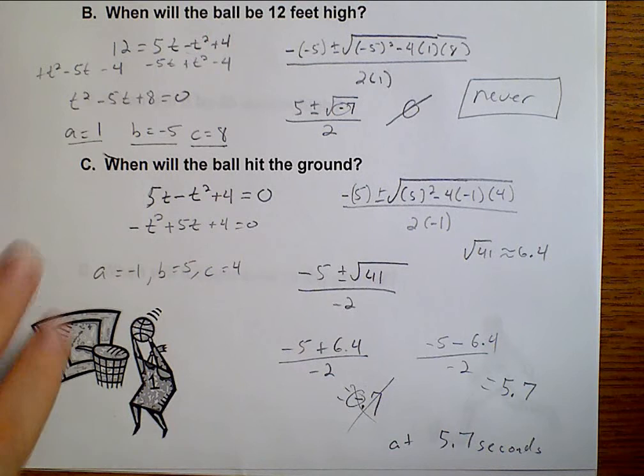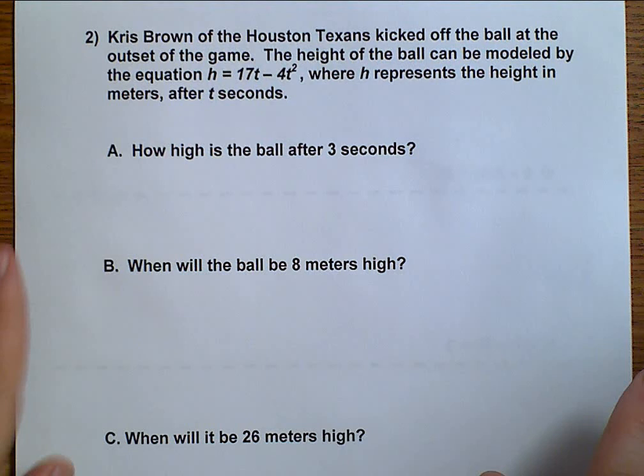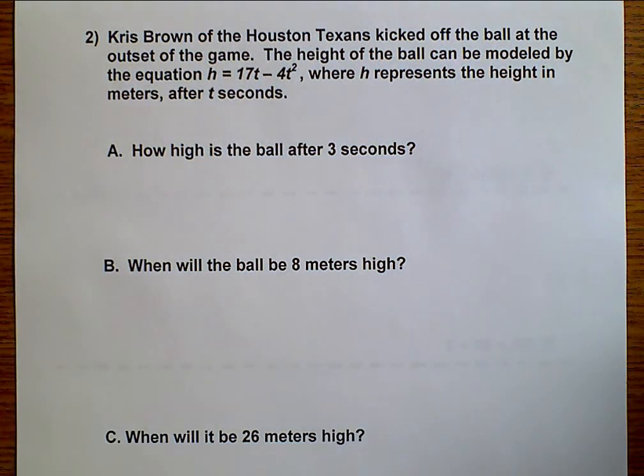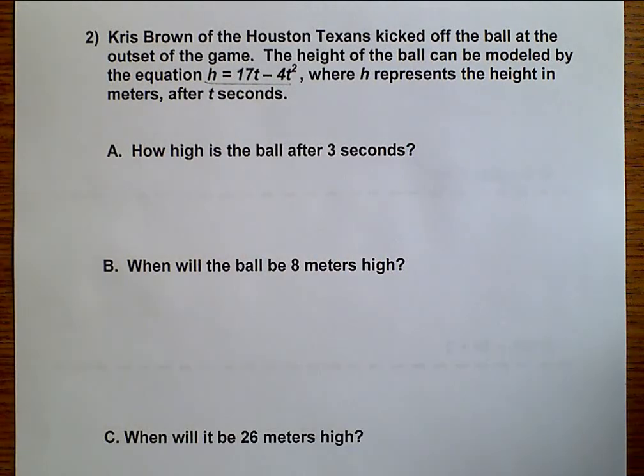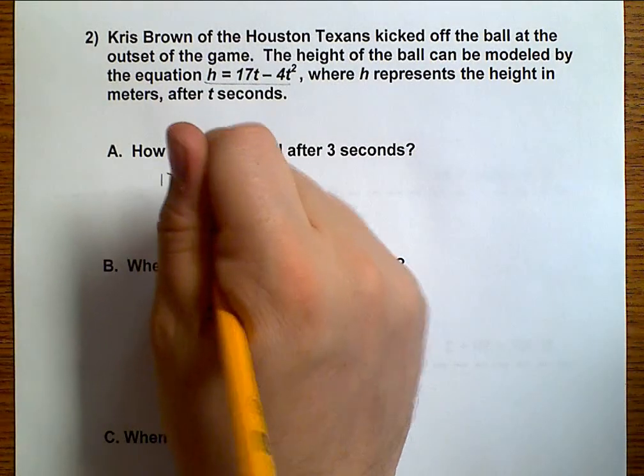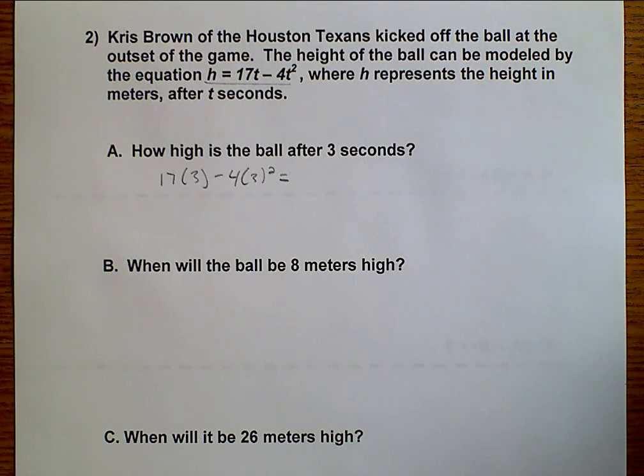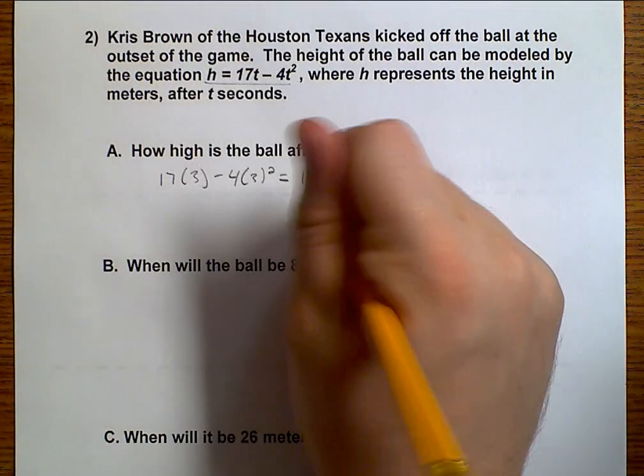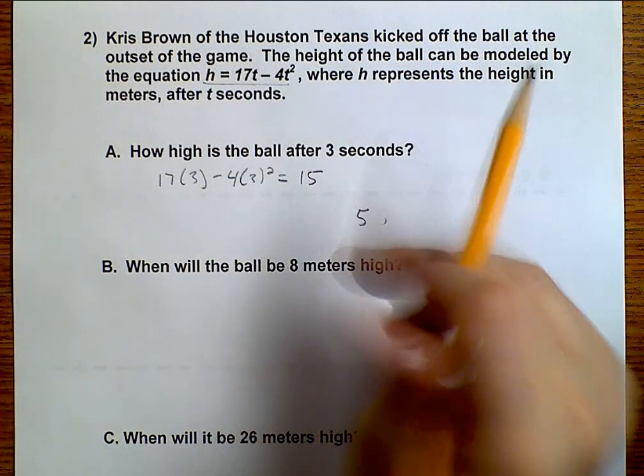Let's go ahead and work on problem number 2. I'm not sure if Chris Brown is for the Houston Texans anymore, but this one person for the Houston Texans kicks off the ball at the start of the game and we use this formula. Well, we start on the ground so that's why we're not adding anything over here. We want to know how high is it going to be after 3 seconds. So, 17 times 3 minus 4 times 3 squared is 15. So, it is 15 meters high.